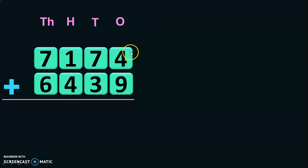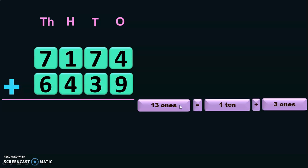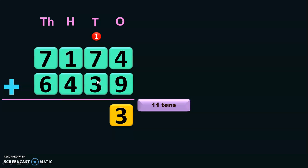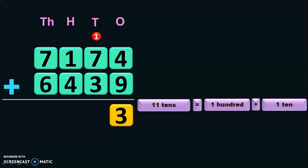4 plus 9 will give you 13 ones. 13 ones can be written as 1 ten plus 3 ones, so you will retain the 3 ones in the ones place and the 1 ten is taken as a carry-over to the tens place. Next, add the digits in the tens place: 1 plus 7 will give you 8, and 8 plus 3 will give you 11 tens. 11 tens can be written as 1 hundred plus 1 ten, so the 1 ten will be retained in the tens place and the 1 hundred will be taken as a carry-over to the hundreds place.